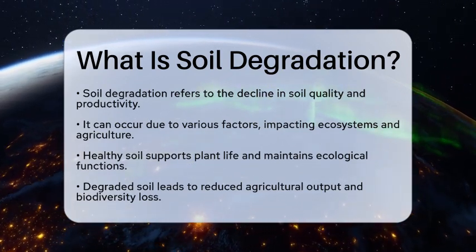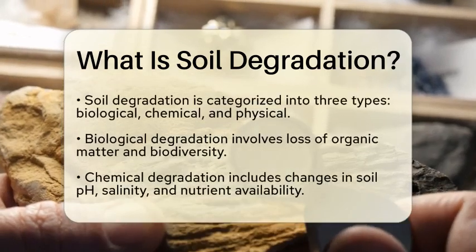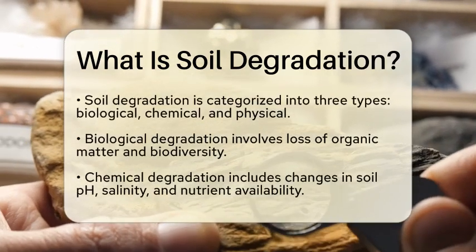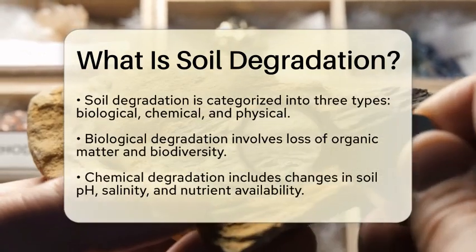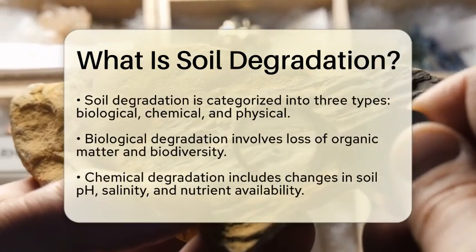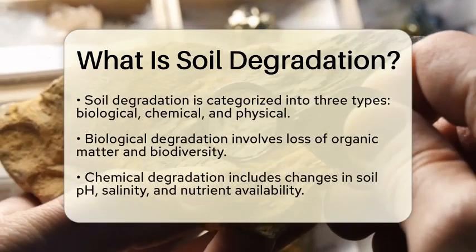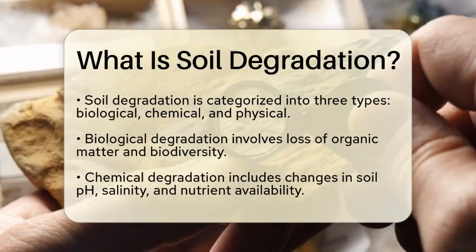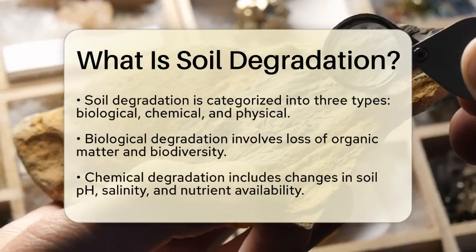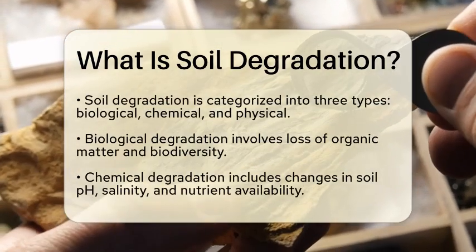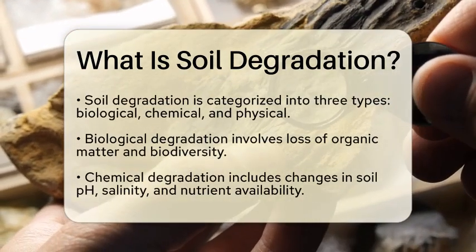Soil degradation can be categorized into three main types: biological, chemical, and physical. Biological degradation involves the loss of organic matter and biodiversity in the soil. Organic matter is crucial for maintaining soil structure and fertility. When it is depleted, soil health and productivity suffer.